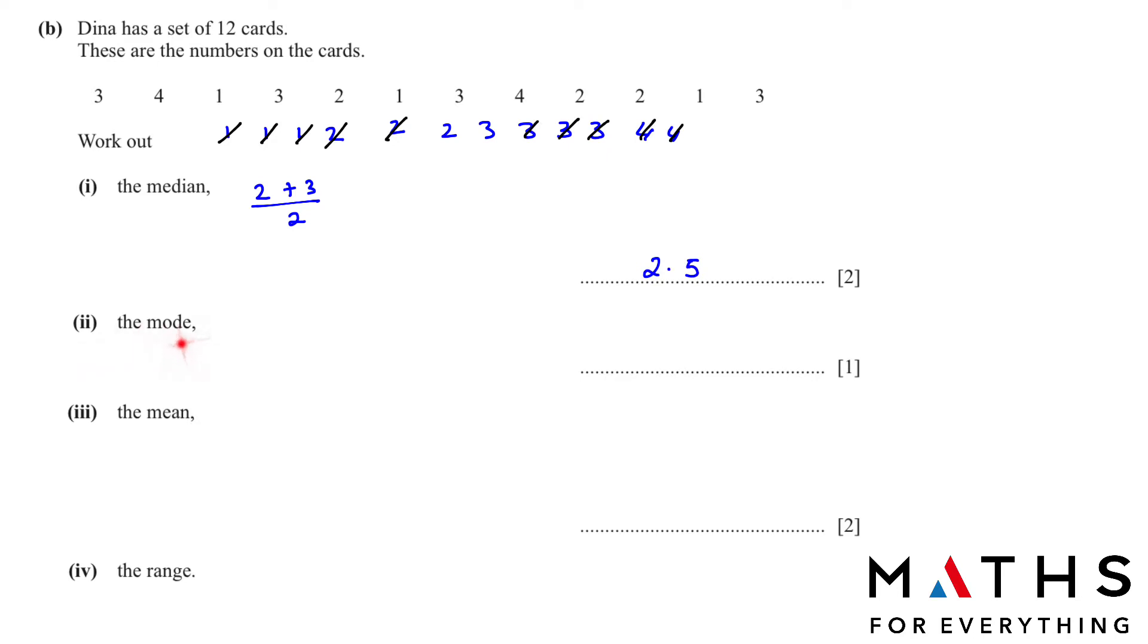Now we need to find the mode. Mode is the most repeated number. The most repeated number very clearly you can see is 3.